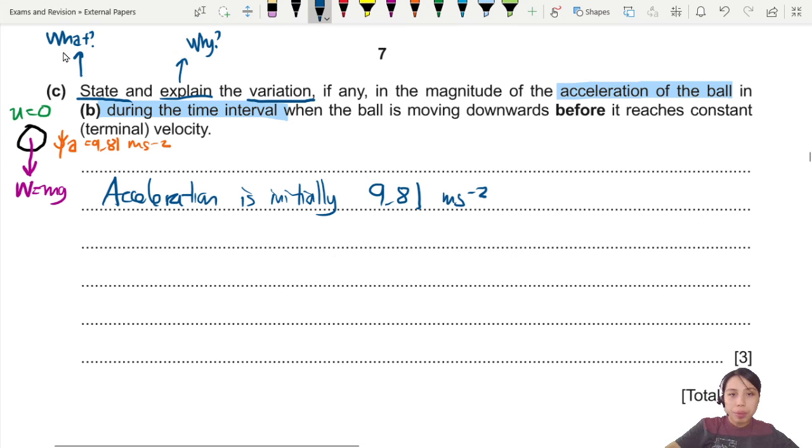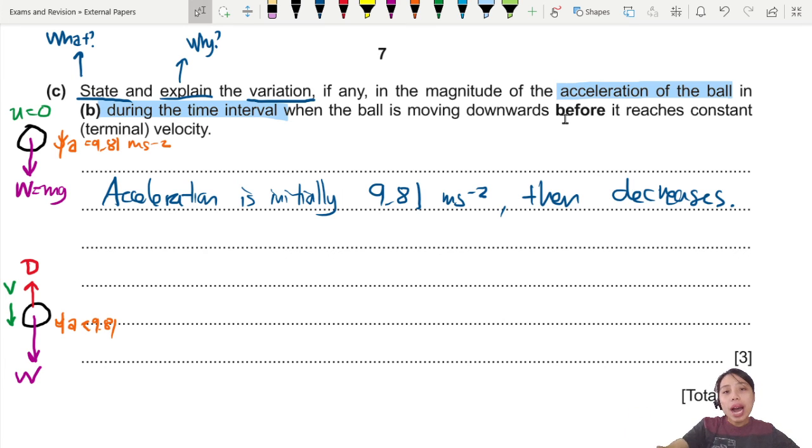Then what happened next? Because before I reached constant terminal velocity, something else will happen. Imagine your ball has sped up. Now it's moving faster. The weight is still the same, didn't get heavier, didn't get lighter. But now you have what we call drag force opposing weight. So acceleration now has to be smaller than 9.81 already. Because you've got two forces fighting each other. So acceleration is initially 9.81, then decreases. Why? You must answer why. Because drag force increases. So the faster you move, the bigger the drag force.